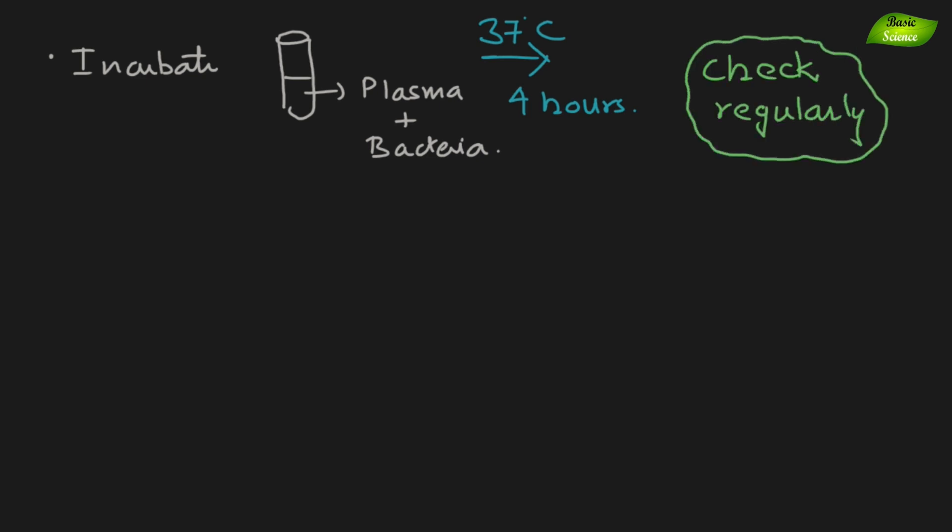Now the next step is incubation. The sample should be incubated and when you add bacteria to the plasma it should be incubated at 37 degrees for four hours. After that you need to check and you can also check regularly. It's very important to check regularly whether there is clot formation going on. Blood clot or clot formation occurs, a physical clot will be formed into the tube and that is the positive reaction.